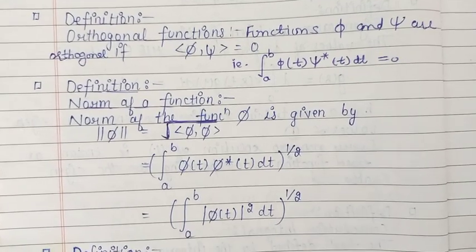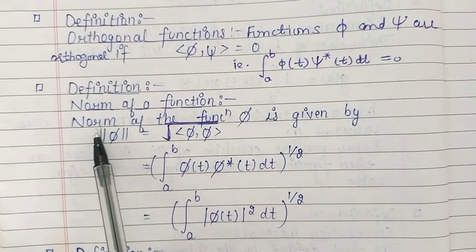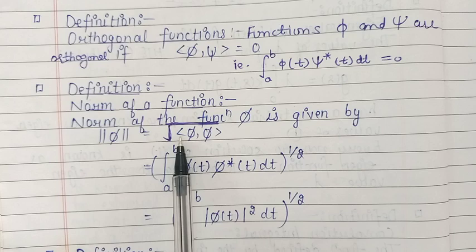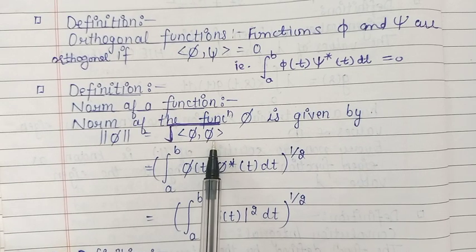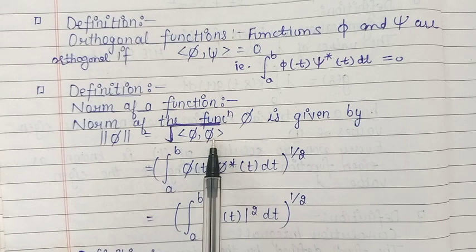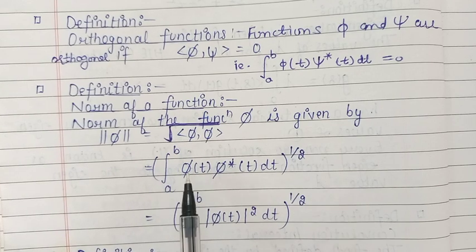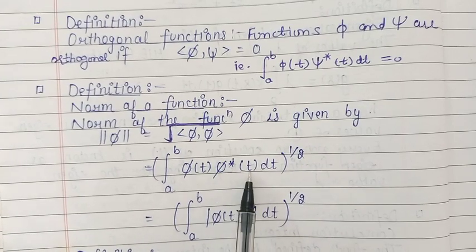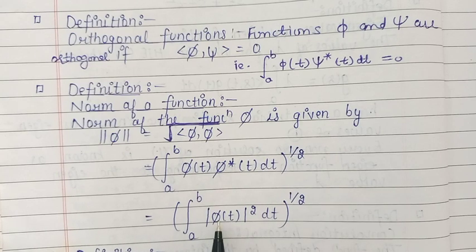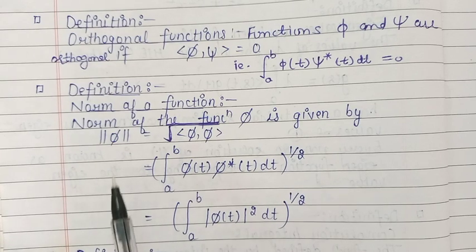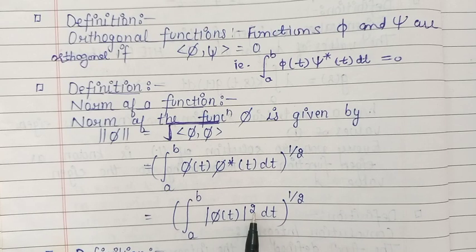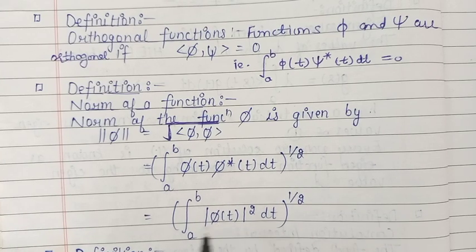Next, we define the norm of a function. The norm of function phi is defined as the square root of the inner product of phi with itself. By definition of inner product, the inner product of phi with itself is the integral from a to b of phi(t) times phi*(t) dt, where phi times phi* equals |phi|². Therefore, the norm of phi is the square root of the integral from a to b of |phi(t)|² dt.